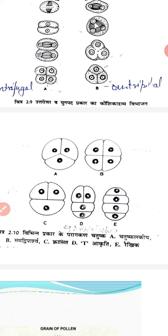Now there are some species, such as those in the Asclepiad family, in which all of the pollen grains remain together. For example, in Calotropis procera, we can observe the pollen grouped in a cell-like structure.